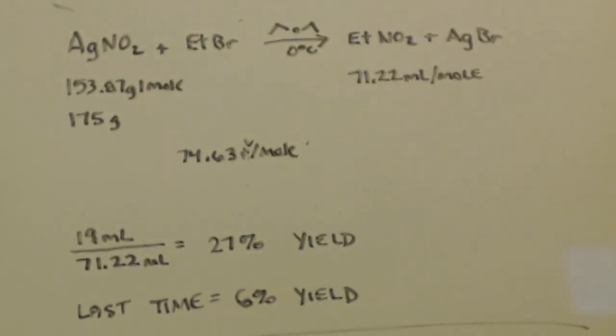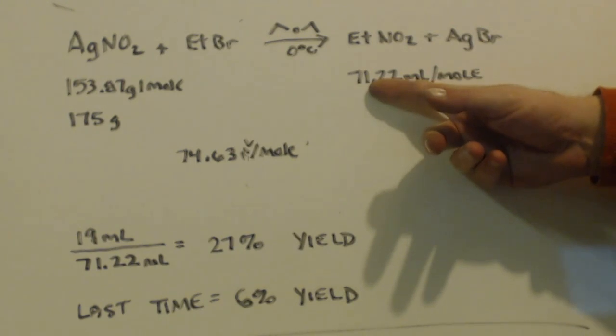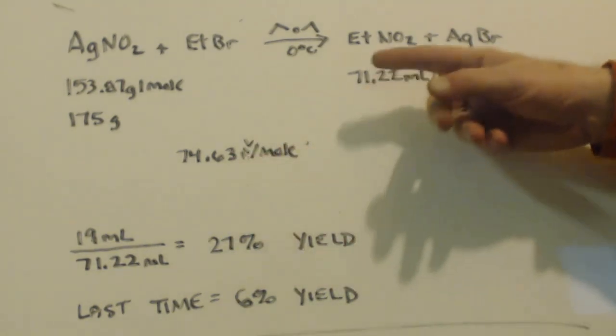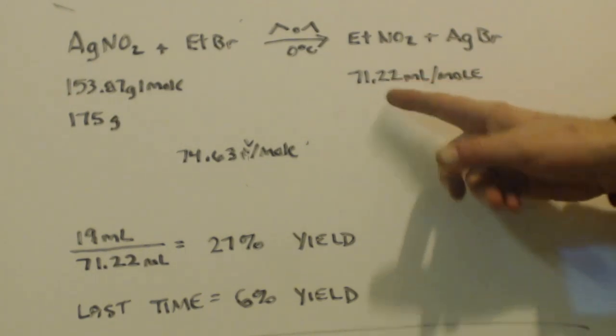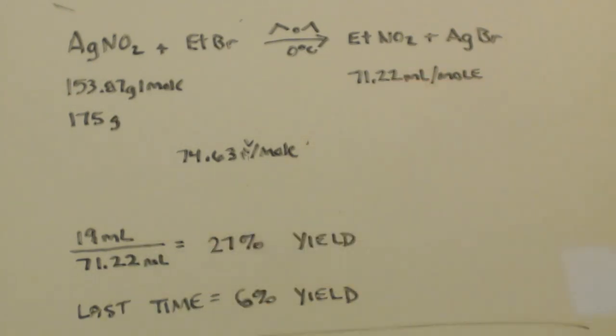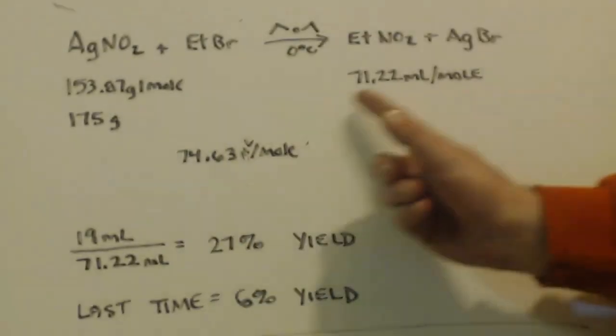So this is my limiting reagent or what I would figure out my yield with. I have one mole here, so I should have one mole here if everything, if I got 100% yield. I got 19 milliliters, divide that by what I should have got, and I end up with 27% yield.